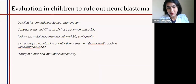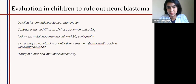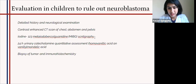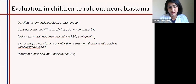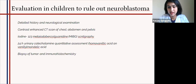Every child with opsoclonus-myoclonus should be screened for occult neuroblastoma with contrast-enhanced CT of the chest, abdomen, and pelvis. In addition, we should check urine catecholamine measurements. There is also the MIBG test, which is very sensitive and specific not only for detecting neuroblastoma but also post-therapeutically as follow-up to see if it has recurred or if metastasis to bone is present. A failure to find neuroblastoma does not exclude the possibility, as no investigation has 100% sensitivity. If the workup is negative, all investigations should be repeated after approximately three months.